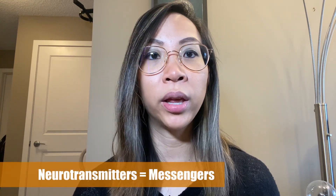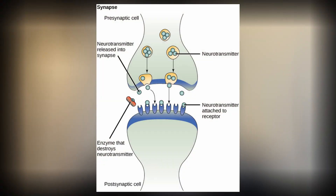Groups of nerves in our bodies communicate using messengers — we call these neurotransmitters. Acetylcholine is the name of the main messenger used in the parasympathetic nervous system. It is released from one nerve ending to another and binds to a receptor called the muscarinic receptor. This binding allows for our rest and digest response.